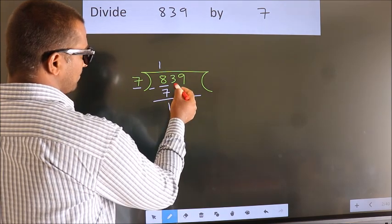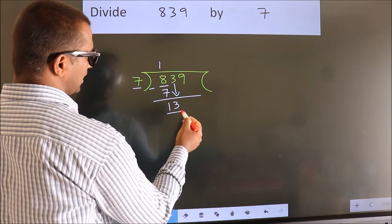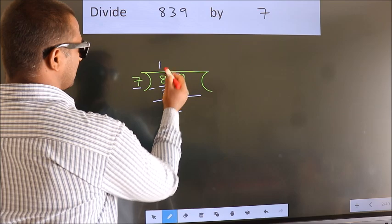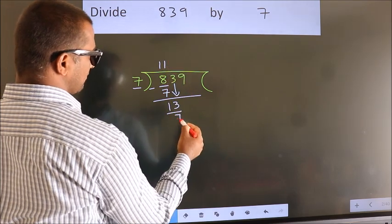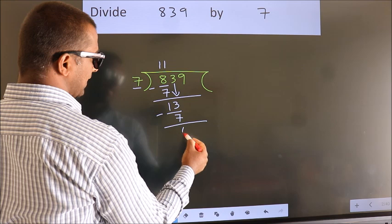After this, bring down the beside number. So 3 down. So 13. A number close to 13 in 7 table is 7 once 7. Now we subtract. We get 6.